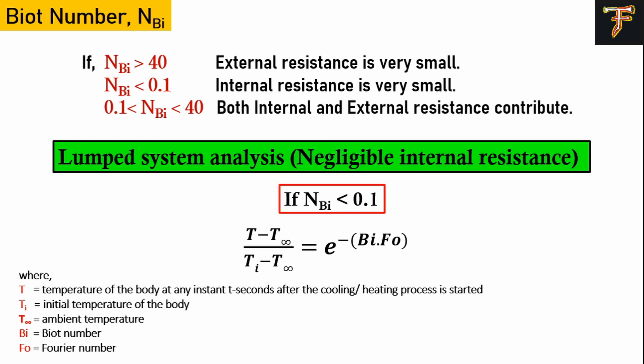Similarly, if the Biot number is less than 0.1, this means that the temperature gradient from the center of the ball to the surface will be negligible. Lastly, if the Biot number lies between 0.1 and 40, this means both the internal as well as the external resistance will contribute to the heat transfer phenomena. There will be a temperature gradient from the center to the surface, as well as from the surface to the ambient condition.